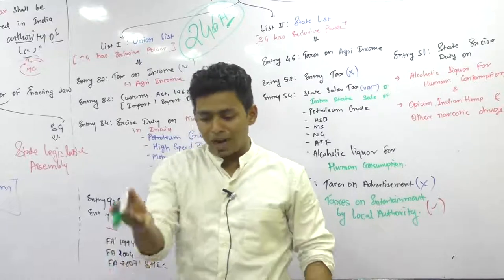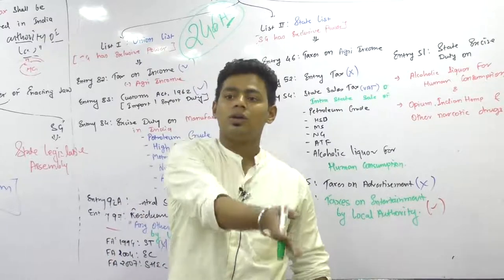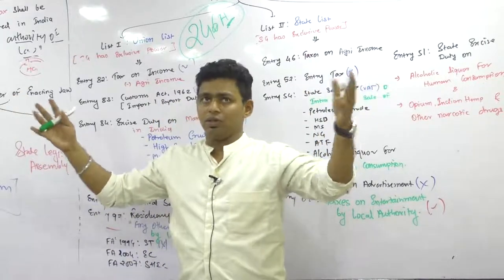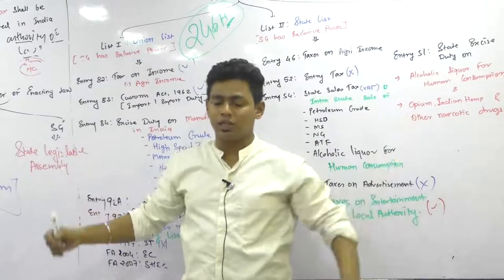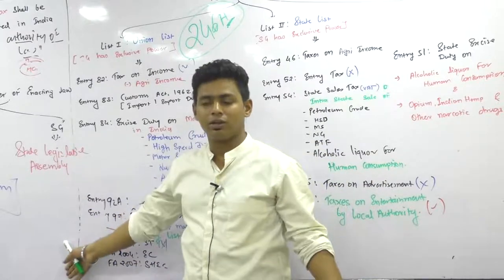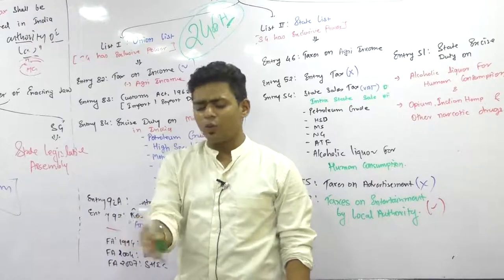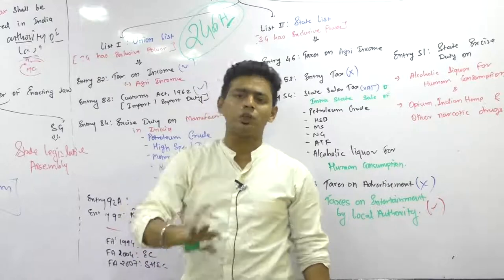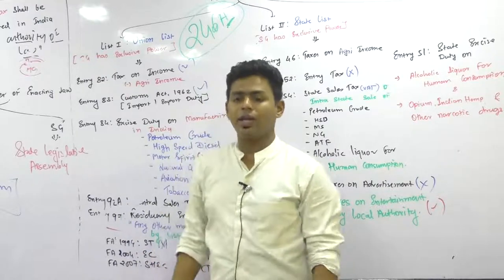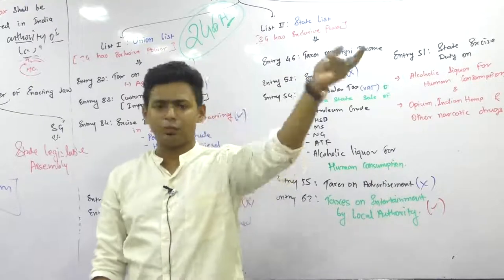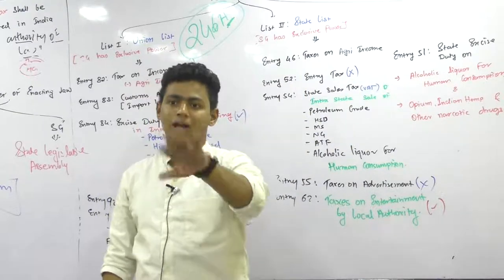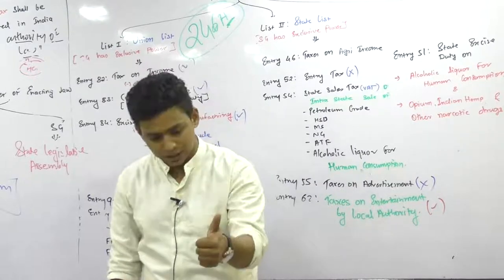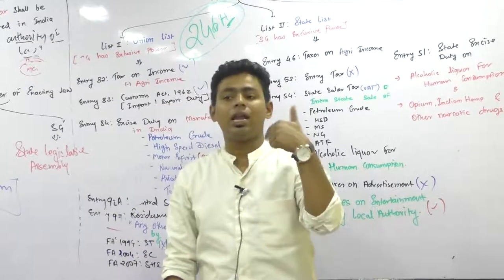So for intrastate supply you have CGST and SGST. But whenever Maharashtra sells goods to Gujarat, there cannot be three GSTs - Central GST, Maharashtra GST, Gujarat GST. That would be too much. So the central government says both states should not charge GST for interstate transactions; instead, the central government charges IGST. In summary, there are three types of GST: CGST, SGST, and IGST. And if it is a union territory, then UTGST.